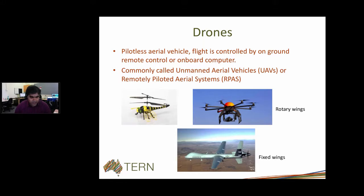The rotary wings, the smaller ones, run in a controlled environment at very fine-scale resolution and run predominantly on battery to get the data. One of the main things about drones is they become quite cheap to run, so that's why they've become quite popular in various applications.